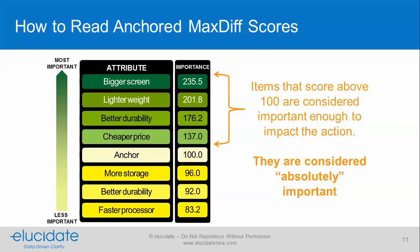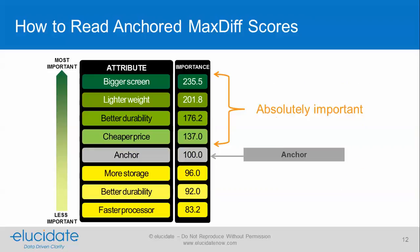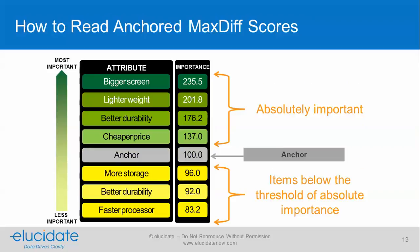When you get the scores back, they look like this. We've got some items that fall above 100, and these are considered important enough to impact the action — they're absolutely important. Here we have our 100 anchor, and then below that are items that fall below that threshold of absolute importance.